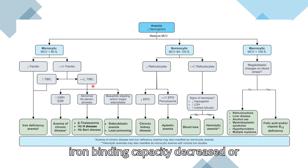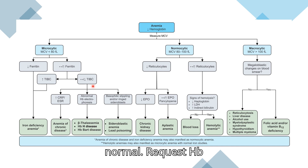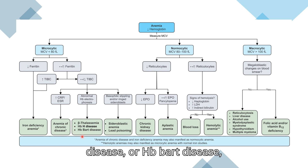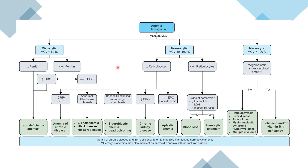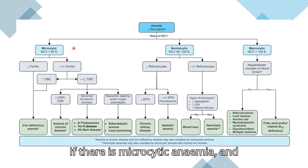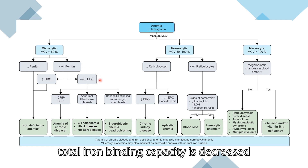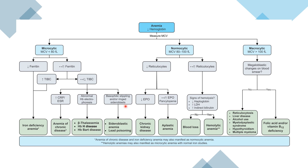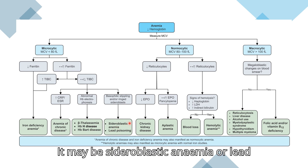If microcytic anemia is present with ferritin increased or normal and total iron binding capacity decreased or normal, request hemoglobin electrophoresis. If abnormal, this points to beta thalassemia, HbH disease, or HbBart disease, according to the results. If there is also basophilic stippling and/or ringed sideroblasts on peripheral film, it may be sideroblastic anemia or lead poisoning.